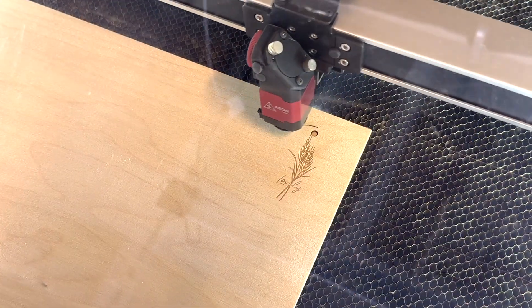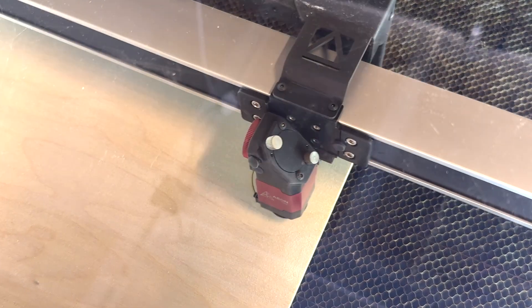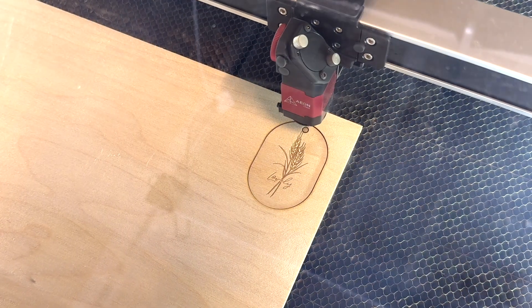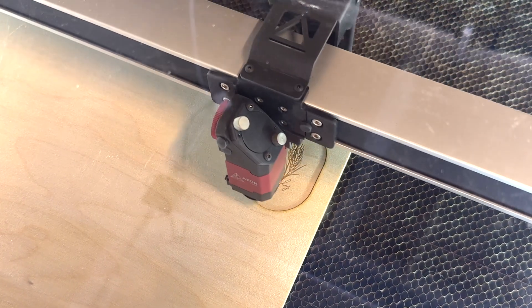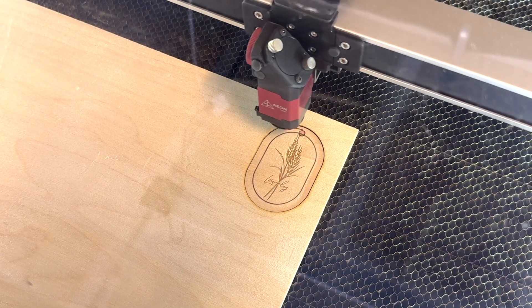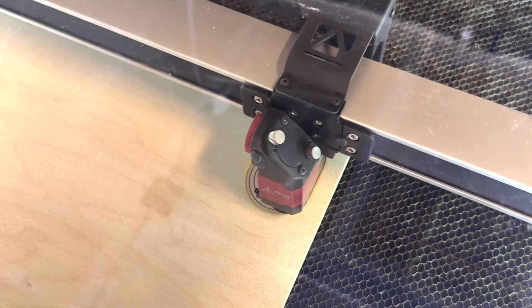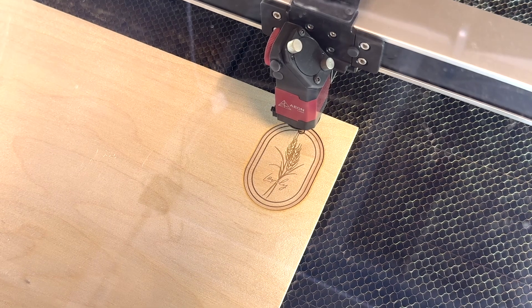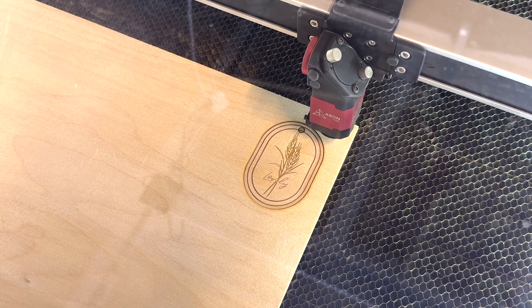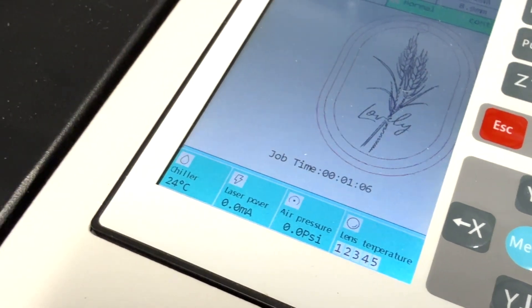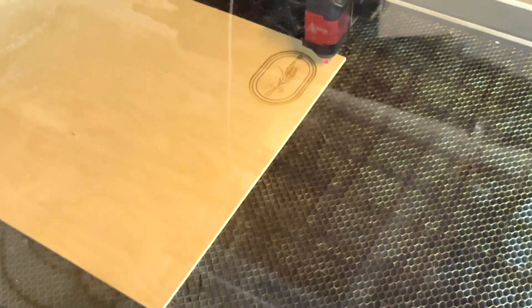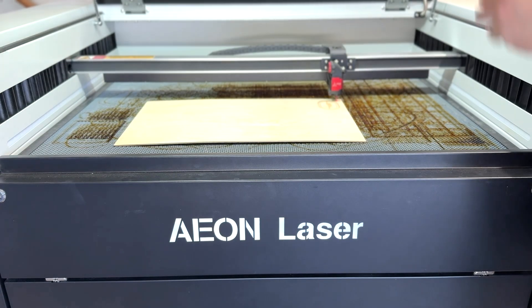Now I've left all of this footage here of the engraving and the cutting in real time and you can see here that this Mira nine red line edition is fast and that is one of my favorite things about this machine. Once my keychain engraving and cutting is complete you can see this file only took about a minute to cut, a minute and six seconds. I can then lift the lid of my laser and check my work.